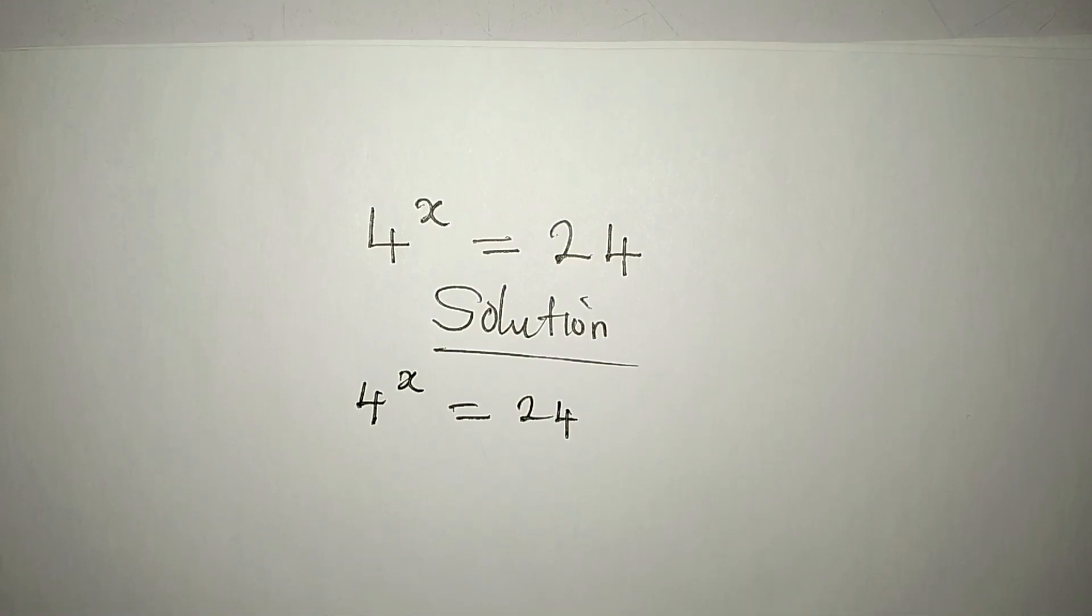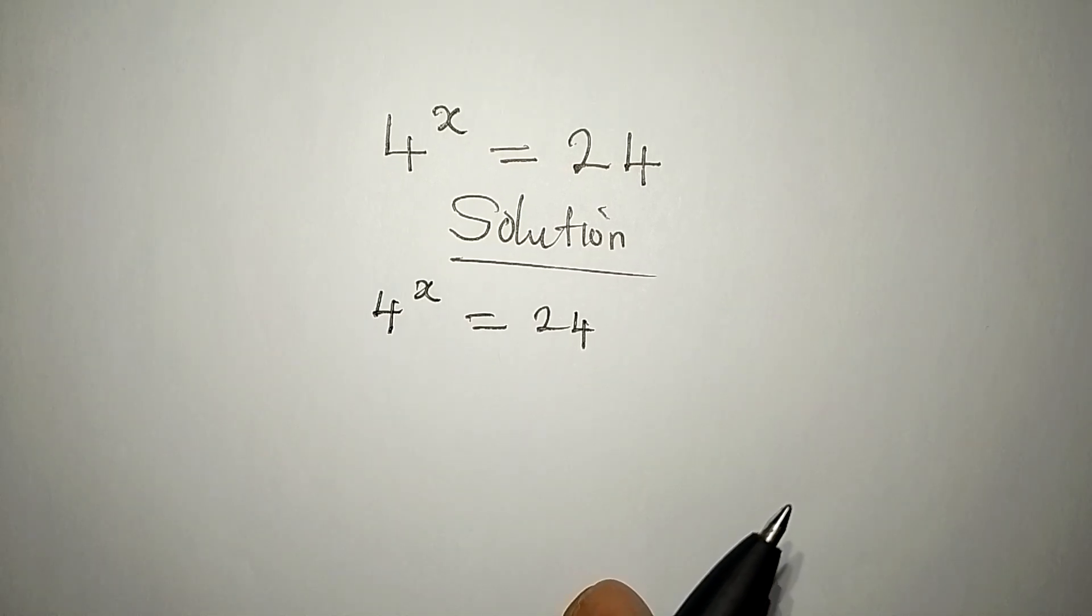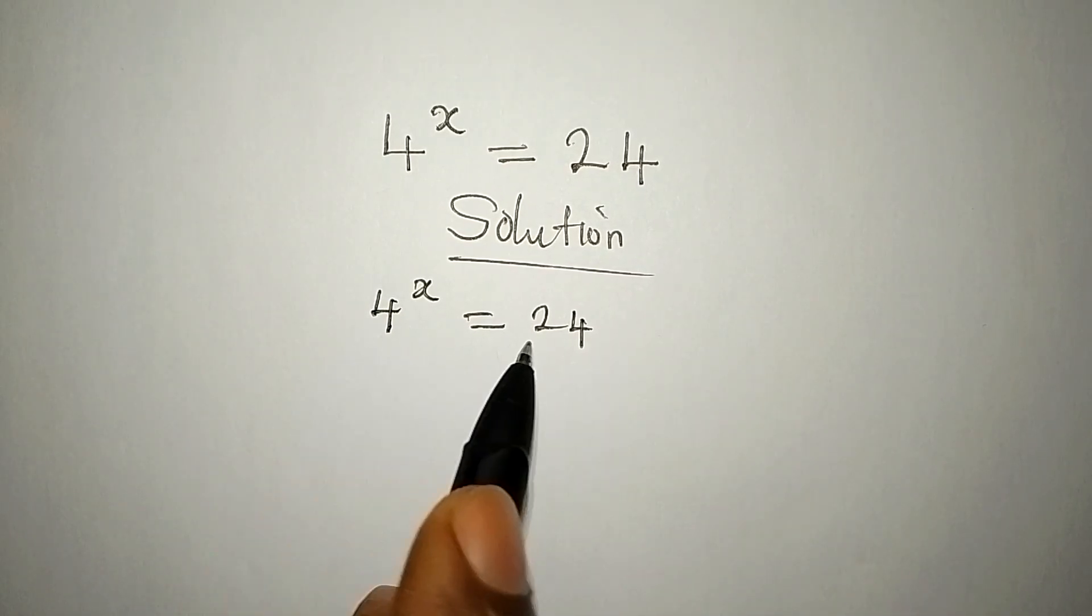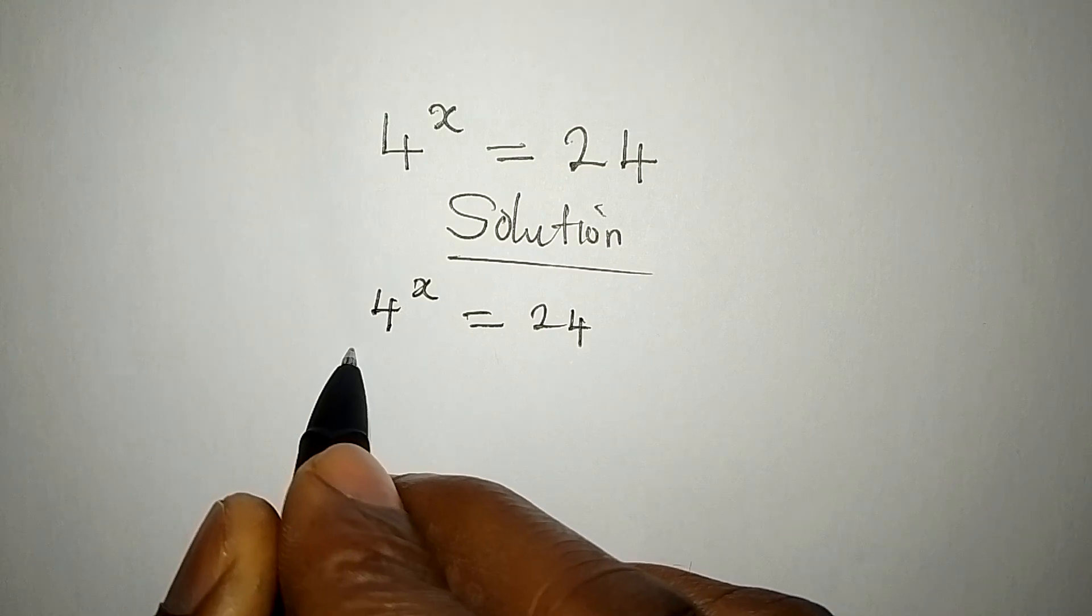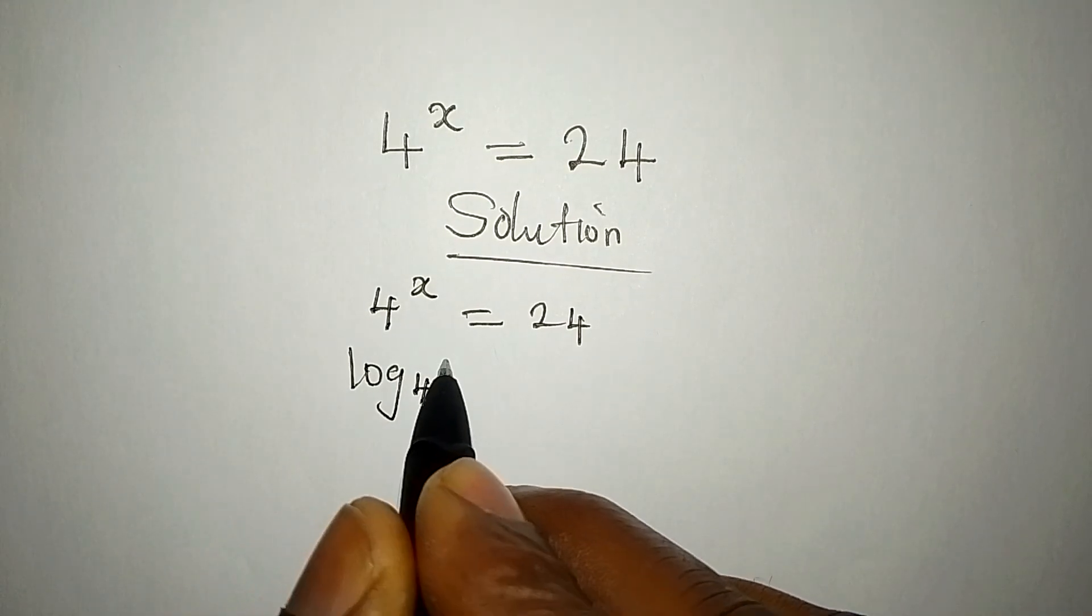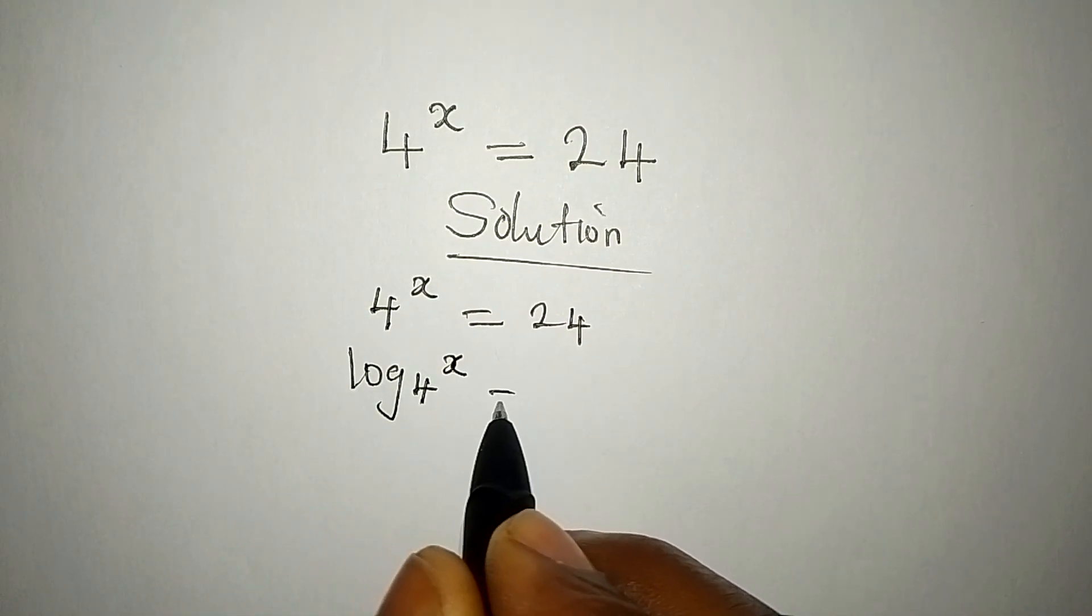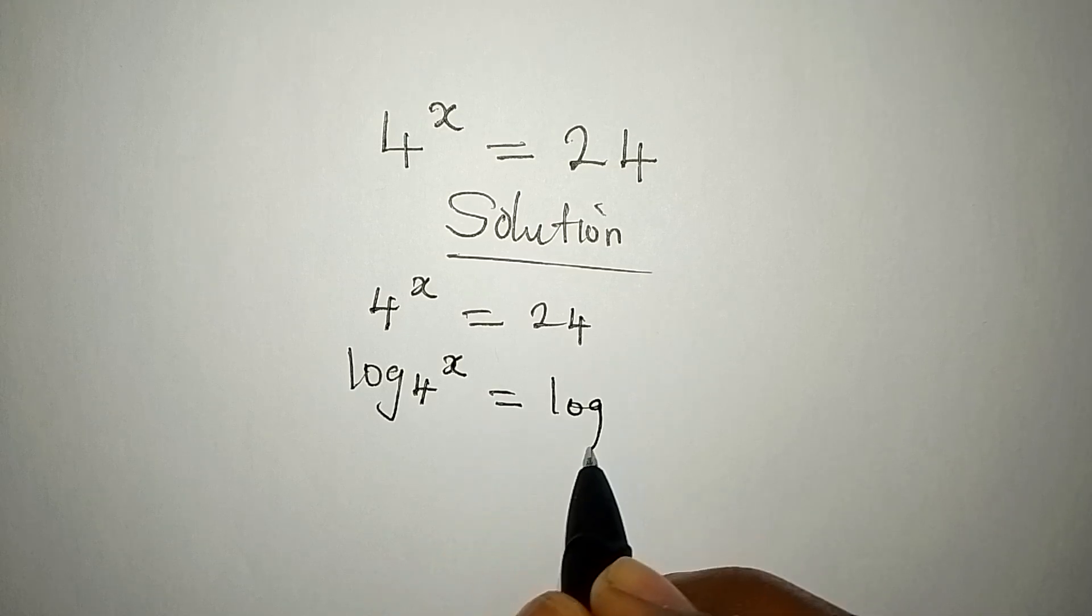We cannot solve this problem without taking the log of both sides. So, we're going to have log 4 to the power of x equals log 24.